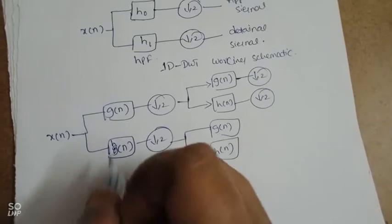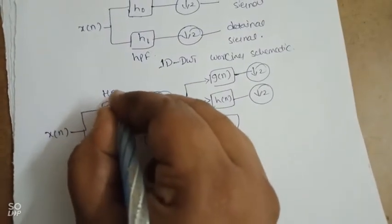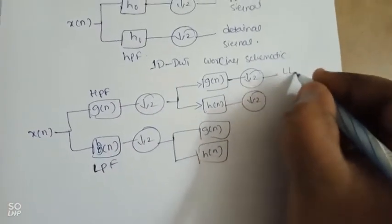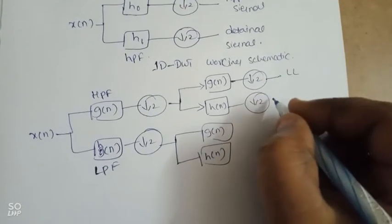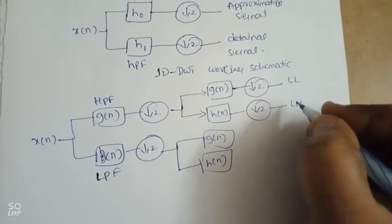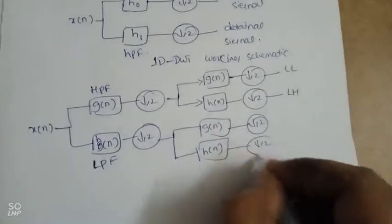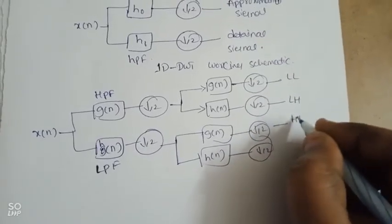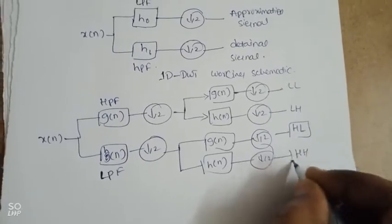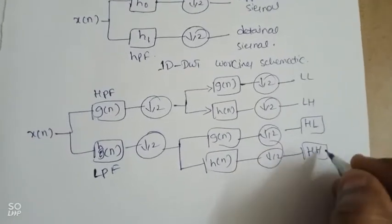Here, h(n) represents the low pass filter (LPF) and g(n) represents the high pass filter (HPF). The two-dimensional analysis bank applies combinations of low pass and high pass filters with down-sampling at each stage.